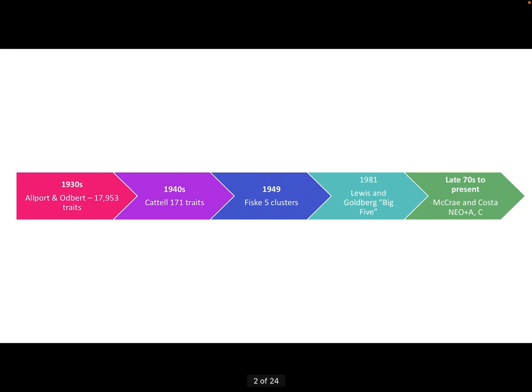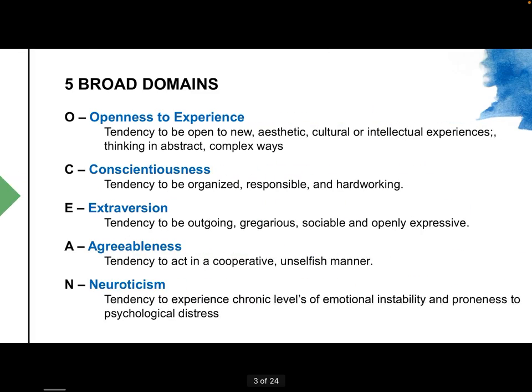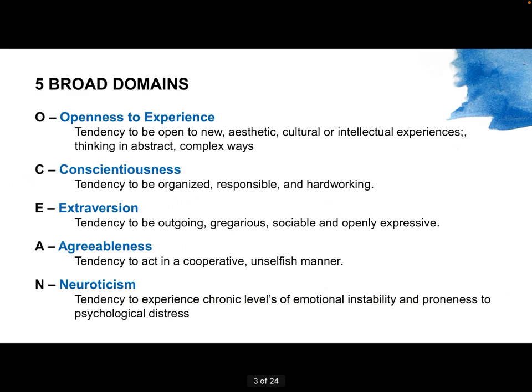For now, we stick with the Big Five. In the late 1940s, Fiske — another researcher — came up with five clusters from the previously studied traits, making describing a person even easier. Years later, Lewis and Goldberg labeled it and called it the 'Big Five,' and then McCrae and Costa used the acronym N-E-O-A-C, which we now more commonly refer to as OCEAN.